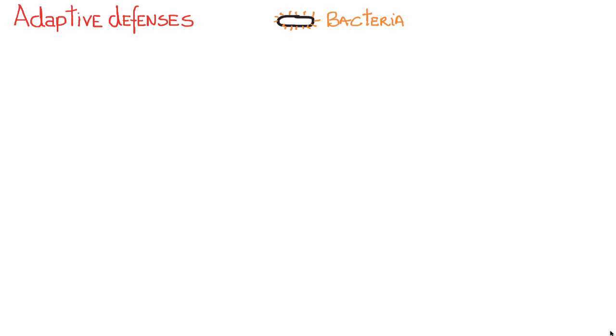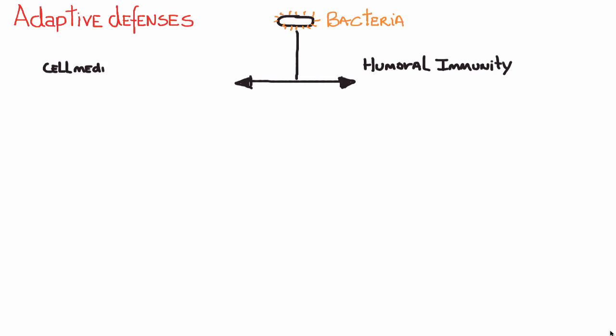I'm going to use a little bacteria as an example of how the immune response can be mounted. The adaptive defenses can be divided into two branches: humoral immunity and cell-mediated immunity. I'll cover humoral immunity first. The word 'humor' means fluid, and the most important fluid in your body is blood — so humoral immunity will involve blood.